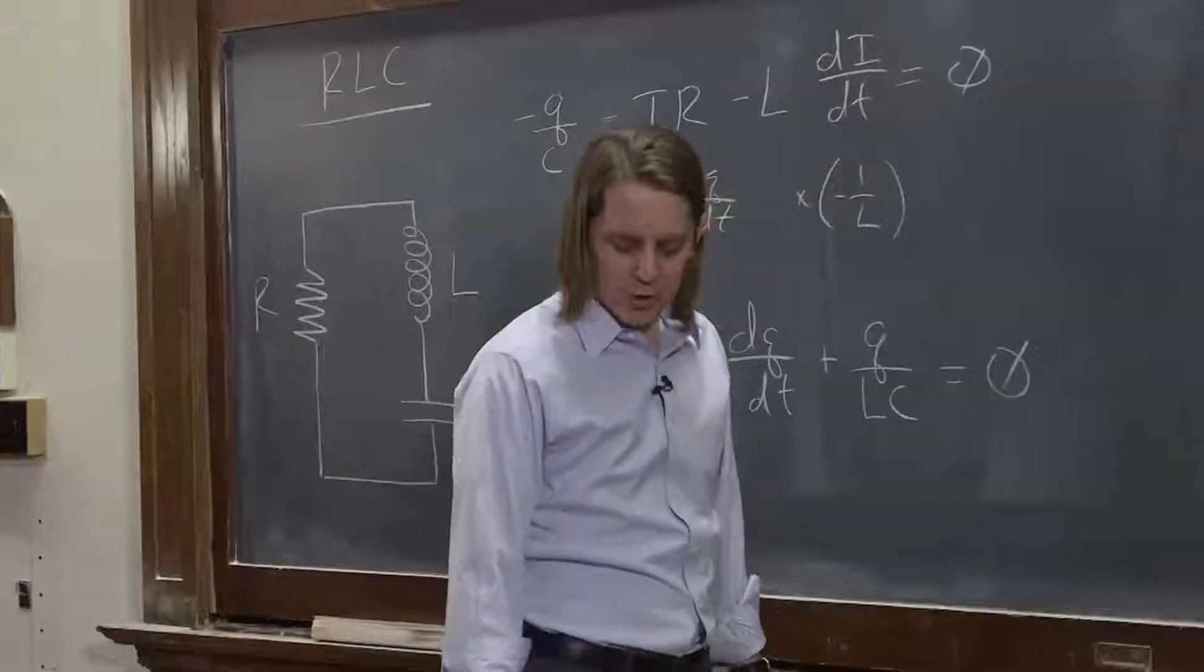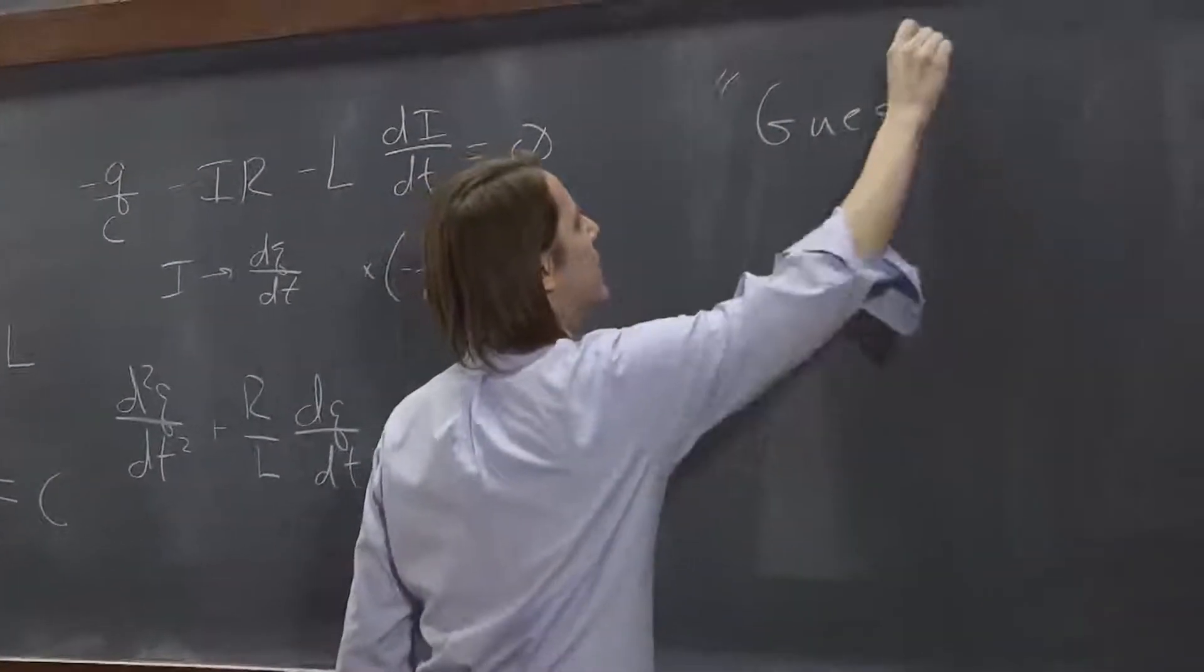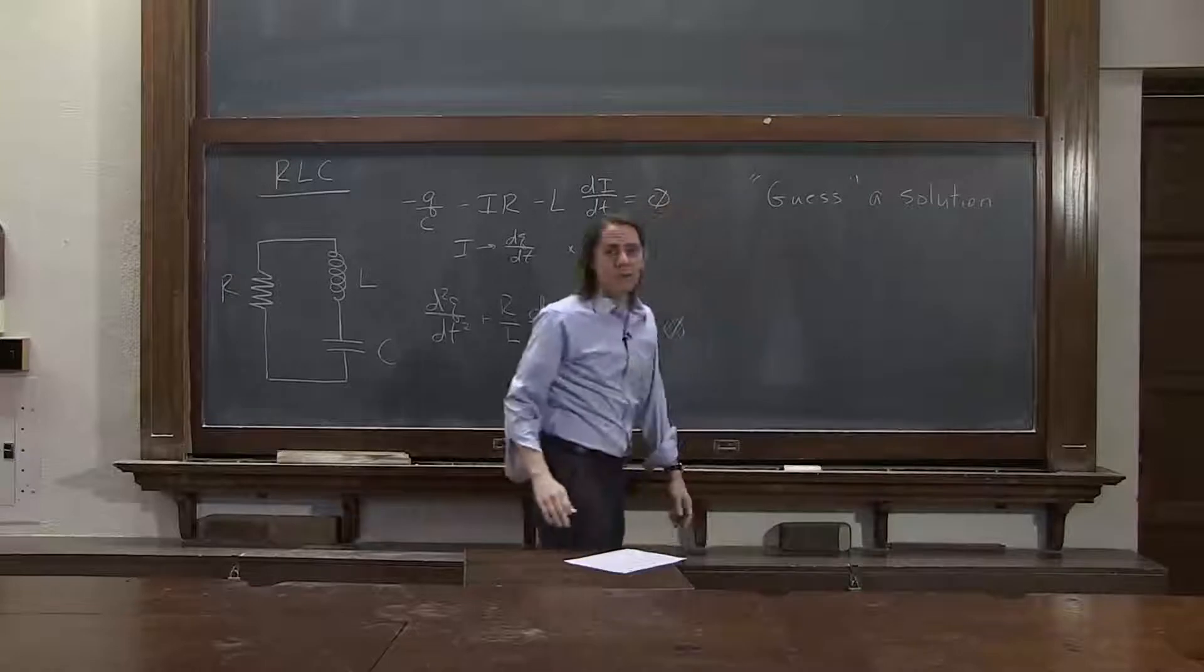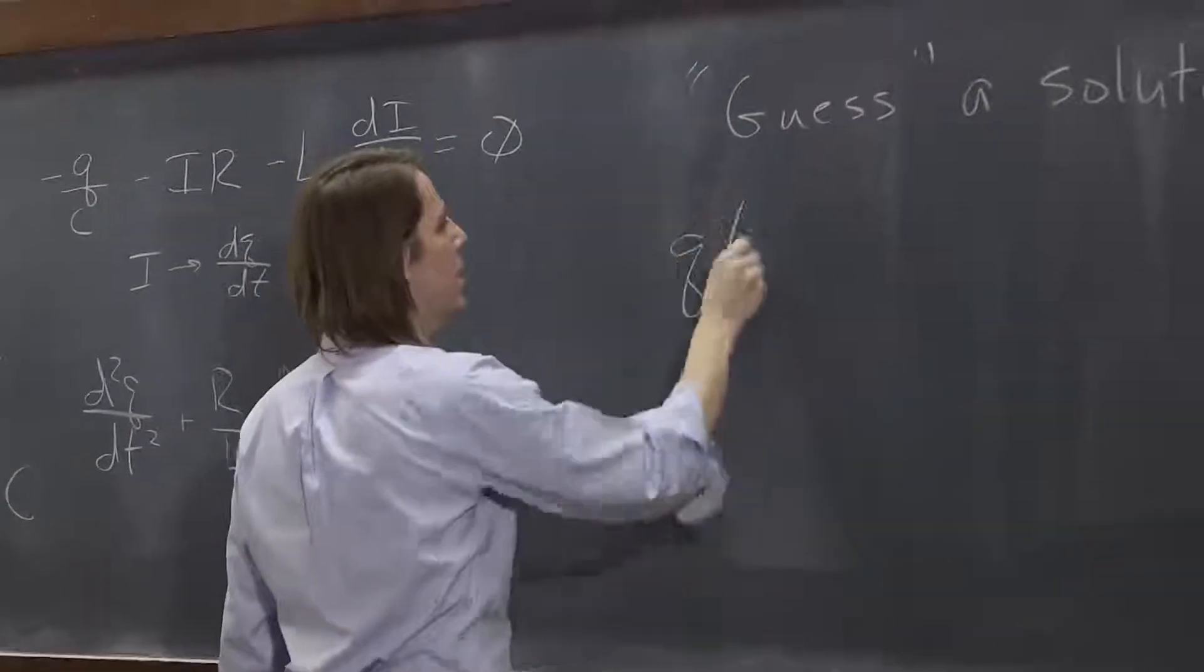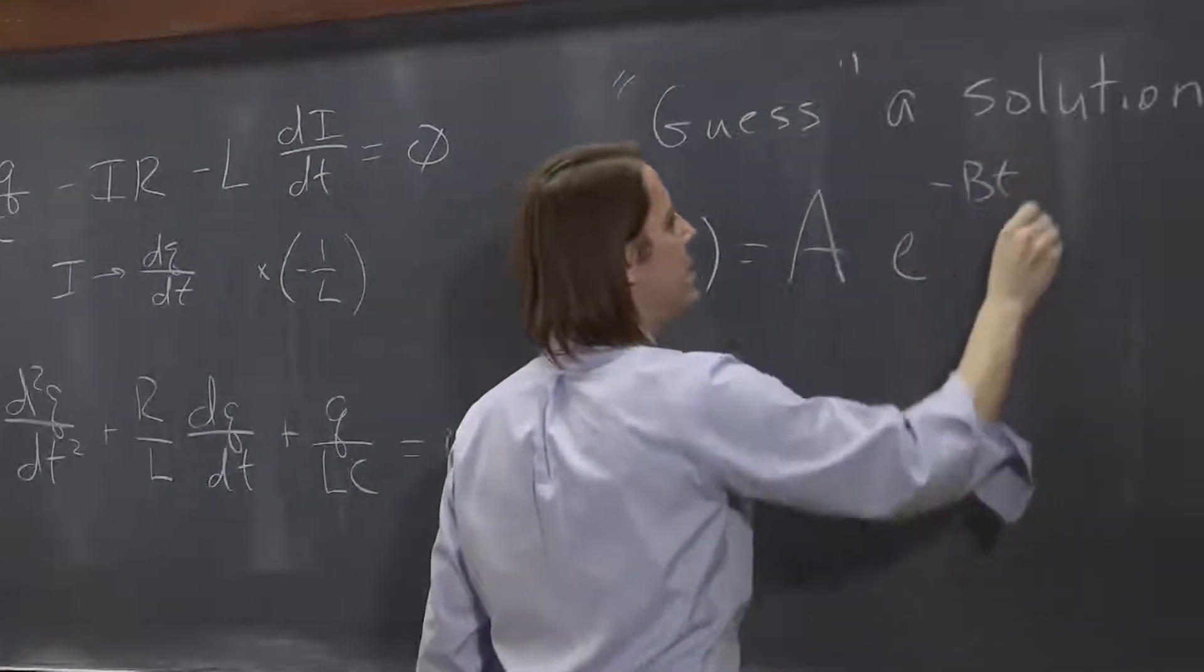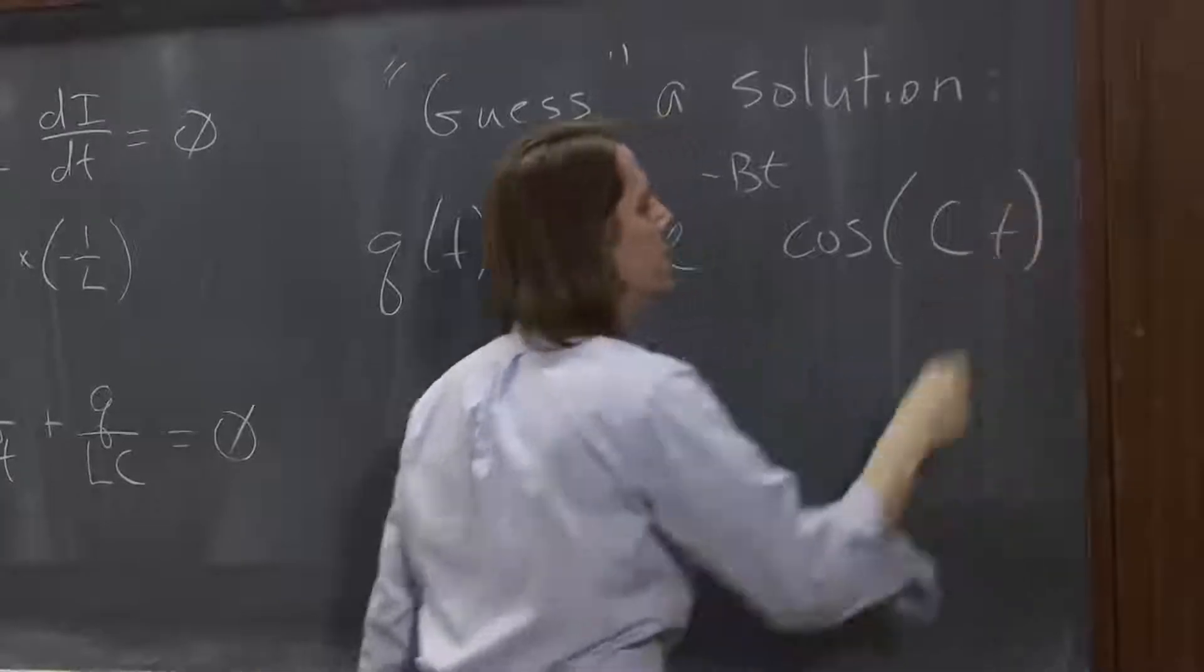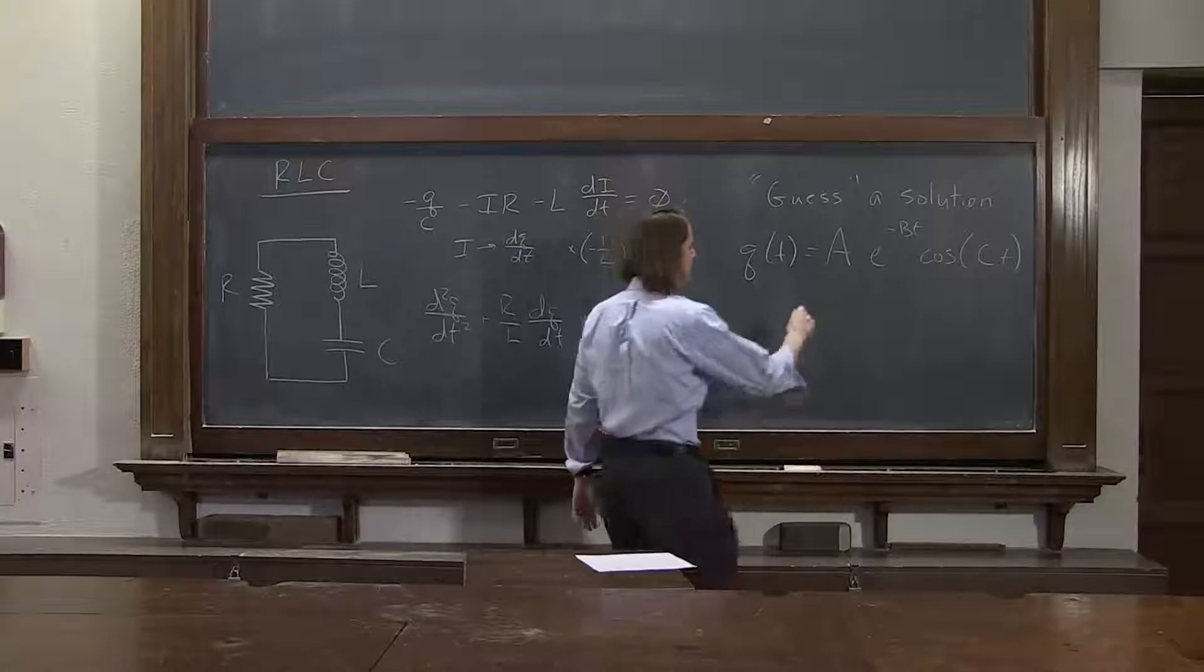We could do the whole thing, and if you knew a lot about complex exponentials we could do it all in detail. But for this one, just to get us moving along, we're going to guess. And guess is in parentheses here because I'm really telling you the right answer, because I have done this before. And my guess is Q(t) equals A e^(-BT) times the cosine of CT.